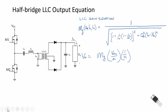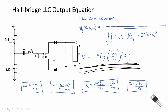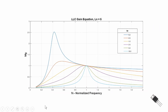Here's the gain equation normalized to QE, FN, and LN for our LLC series converter. We define a normalized inductance L sub N, equal to the magnetizing inductance L sub M divided by our resonant inductance L sub R. Our equivalent resistance value is the same, our normalized switching frequency is the same, and we use the same quality factor. Our gain equation now is a function of our normalized switching frequency, our quality factor, as well as our normalized inductance L sub N.